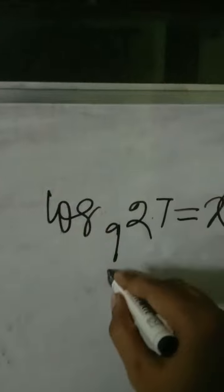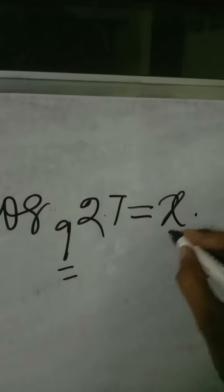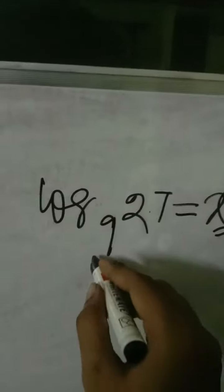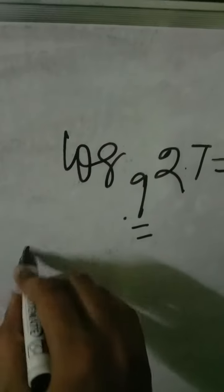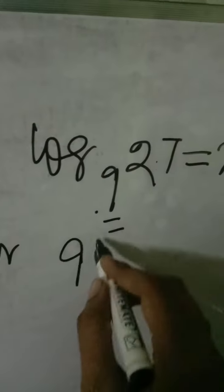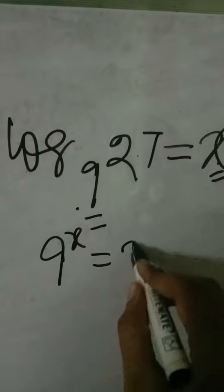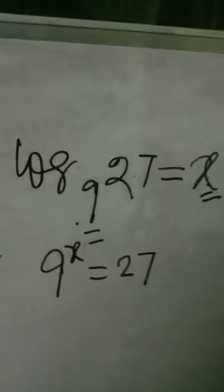To exponential form, this is the base and this is the number on the other side. So 9 exponent x should be equal to 27. You can write 9^x = 27. We have seen in the previous video this is how we can convert into exponential form.